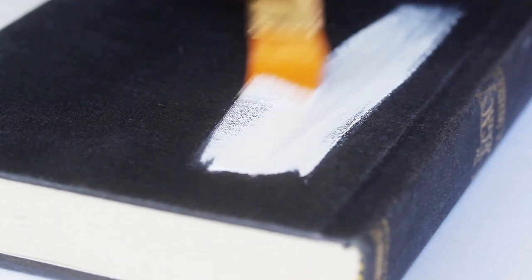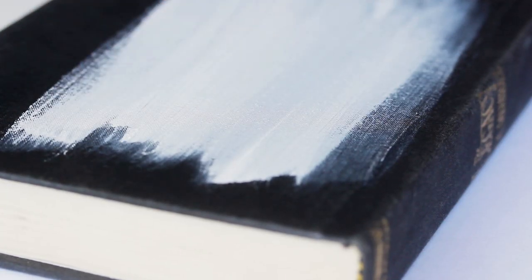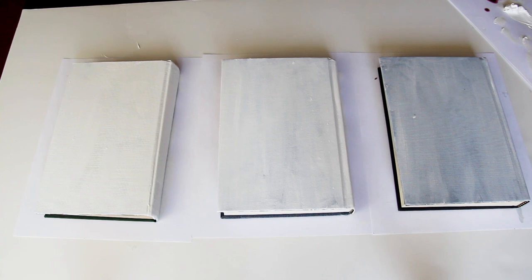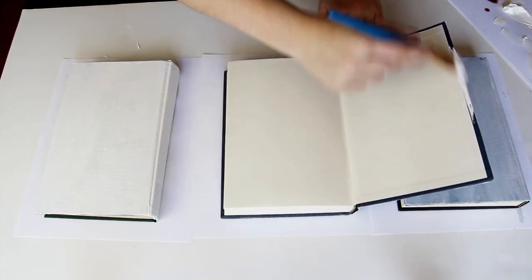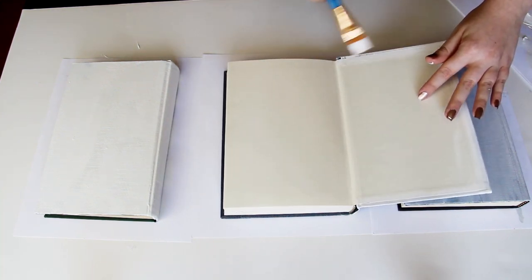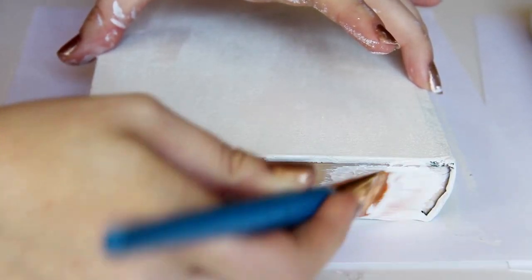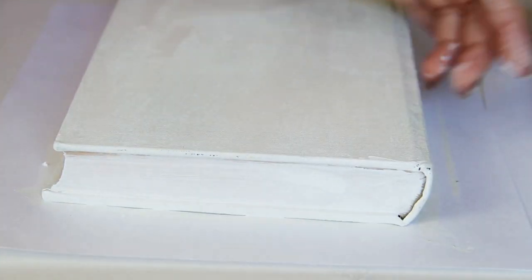So my first step was to paint the books white so they looked a little more uniform. To be honest I probably should have used spray paint for this step rather than acrylic paint because it took a while for the acrylic paint to dry so I could paint the entire thing. But I got it done in the end. And I also painted the edges of the books so that they would be a more uniform white as well.